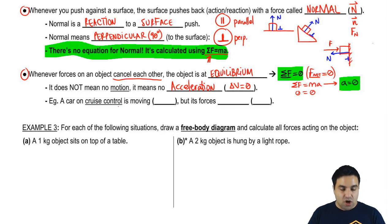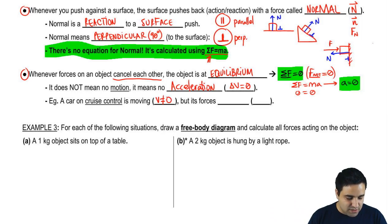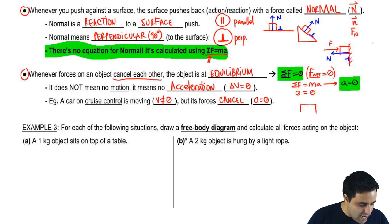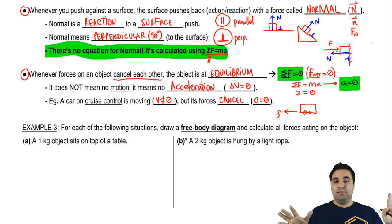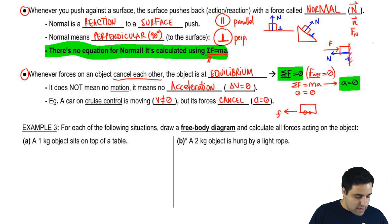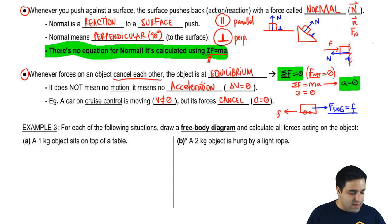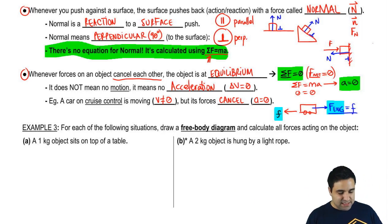For example, if you have a car on cruise control, it moves with constant speed — its velocity is not zero, but its forces have to cancel, because its acceleration is zero. There's friction that would make you slow down normally, but the engine pushes with a force equal to friction. When these forces are exactly the same, they cancel perfectly, acceleration is zero, and the car keeps cruising at the same speed.